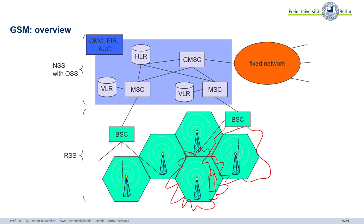In GSM, a mobile station attaches to exactly one antenna — not two or more antennas at the same time, only one antenna. These antennas are also called Base Transceiver Stations, or BTSs. They are connected to a Base Station Controller. The Base Station Controller plus the Base Transceiver Station plus the mobile stations form the so-called Radio Subsystem. This basically forms the part of the architecture that handles all the issues of wireless transmission — all the problems, modulation, coding, everything.